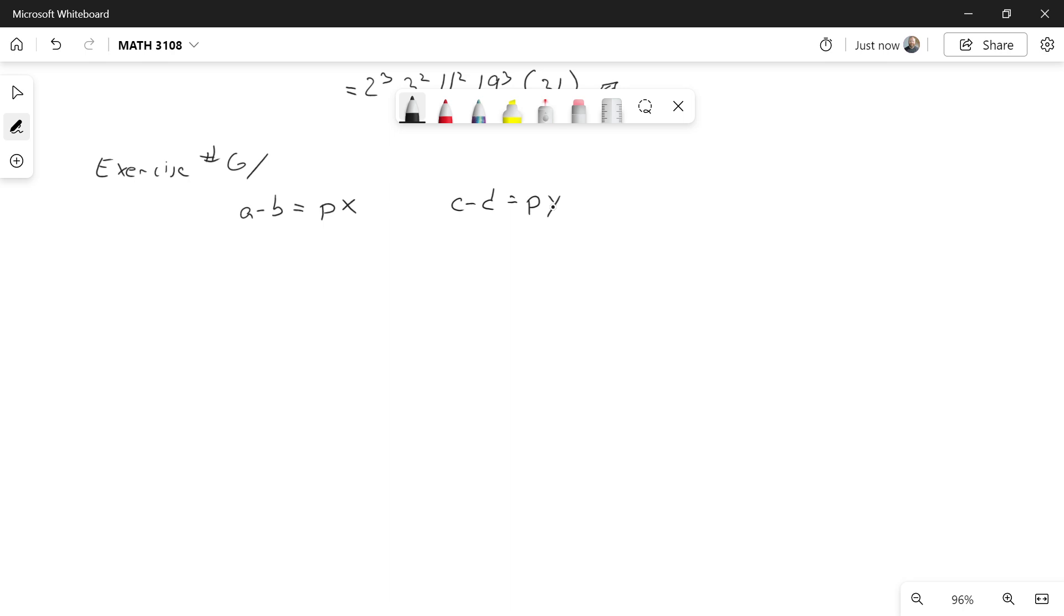Now what I'm going to do is I'm going to add these two things together. So A minus B plus C minus D. This is equal to PX plus PY. Now I can rewrite my left-hand side as A plus C minus B plus D. And I can rewrite my right-hand side since both terms have a P factor, or a P in its factor. I can take it out, so P times X plus Y.